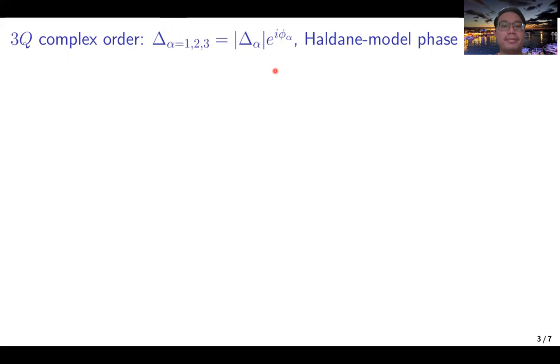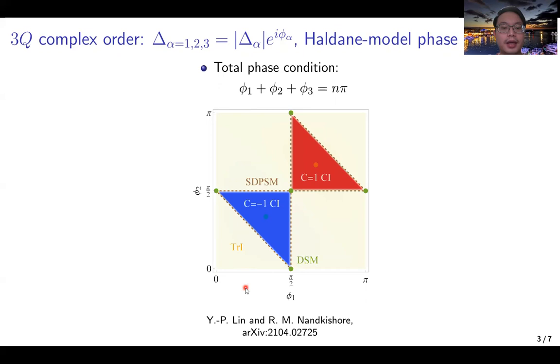The Ginzburg-Landau analysis also tells us that there is a total phase condition. That means we have the summation of the three phases being quantized. We can choose two of the phases to be the tunable parameter and map out the phase diagram. And the computation of the Chern number gives us a rich phase diagram like this.